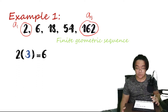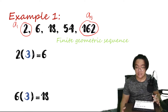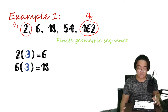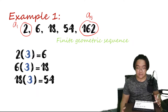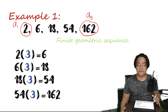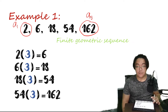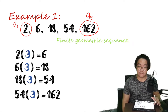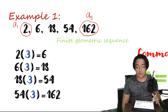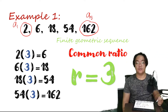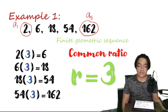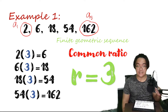So 2 times 3 is equal to 6. 6 times 3 is equal to 18. 18 times 3 is equal to 54. 54 times 3 is equal to 162. That constant number we multiplied to get the next term of this sequence is called the common ratio. So the common ratio for this geometric sequence is equal to 3.